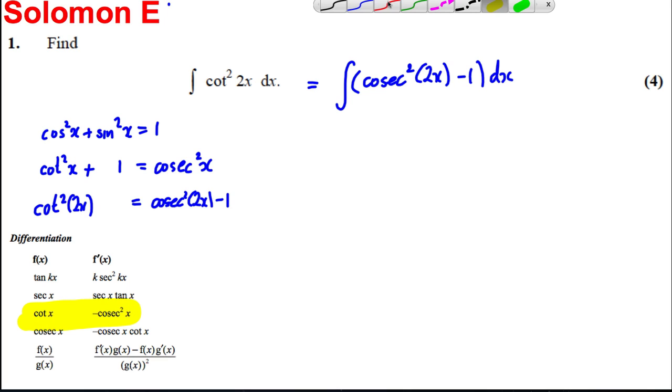We know that if we differentiate cot, we get cosec squared or negative cosec squared. So if we integrate negative cosec squared, we must get cot. So therefore,